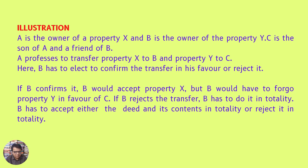Illustration: A is the owner of a property X and B is the owner of the property Y. C is the son of A and a friend of B. A professes to transfer property X to B and property Y to C. Here B has to elect to confirm the transfer in his favour or reject it. If B confirms it, B would accept property X but would have to forego property Y in favour of C. If B rejects the transfer, B has to do it in totality — B must accept the deed and its contents in totality or reject it in totality.